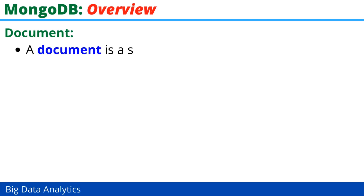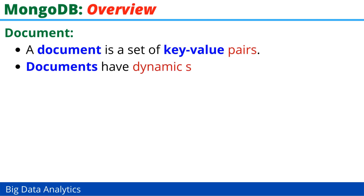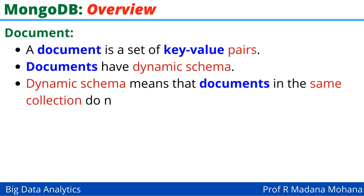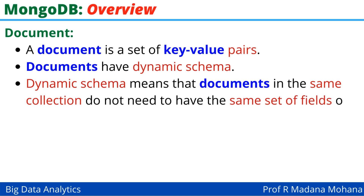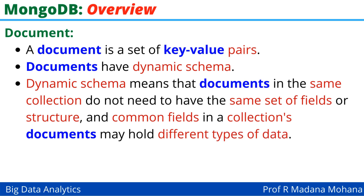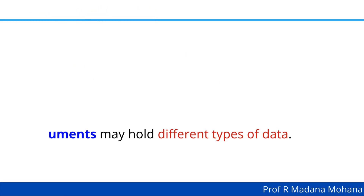What is a document? A document is defined as a set of key-value pairs — similar to what we know from MapReduce. Documents have a dynamic schema. Dynamic schema means that documents in the same collection do not need to have the same set of fields or structure, and common fields in a collection's documents may hold different types of data.